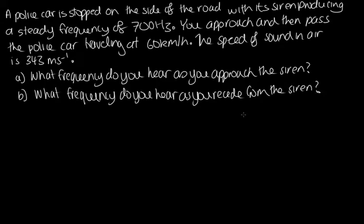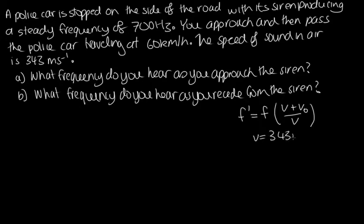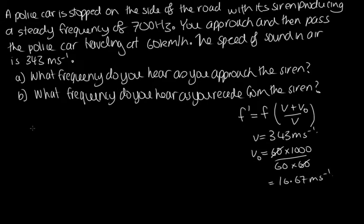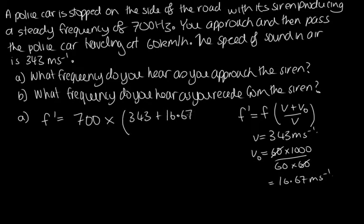To solve this we use: f dash = f × (v + v_o) / v. We know v = 343 m/s. The velocity of the observer is 60 km/h = 60 × 1000 / (60 × 60) = 16.67 m/s. For part a, the observer is approaching the source, so: f dash = 700 × (343 + 16.67) / 343. Solving on the calculator, we get 734 hertz.